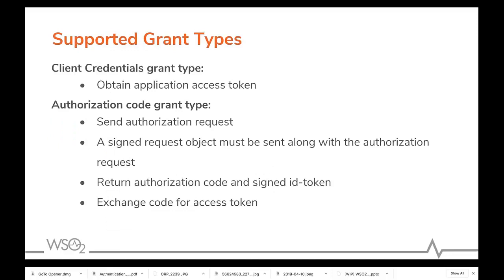The open banking security profile mentions client credentials grant as well as authorization code grant. The client credentials grant is used to obtain an application access token. In the authorization code grant, you should first send an authorization request along with a signed request object. After all validations are done, an authorization code along with a signed ID token will be returned to the redirect URL of the TPP. After that, this authorization code should be exchanged for a user access token.